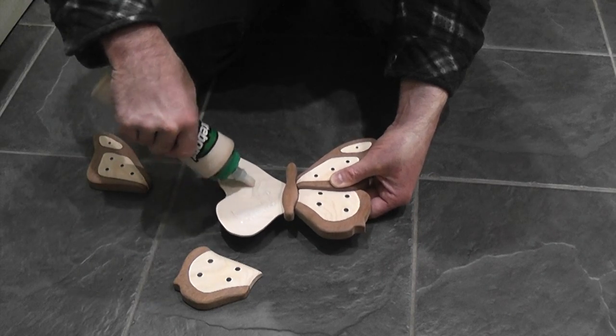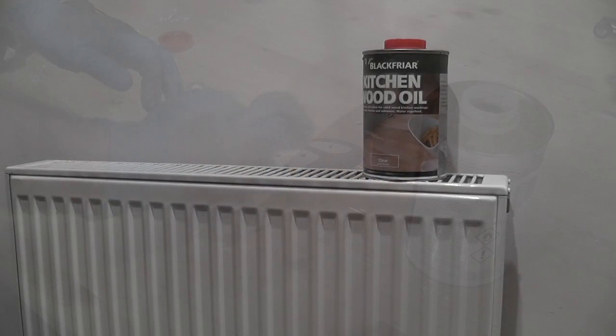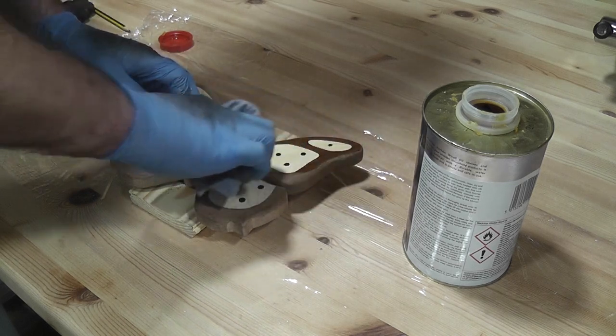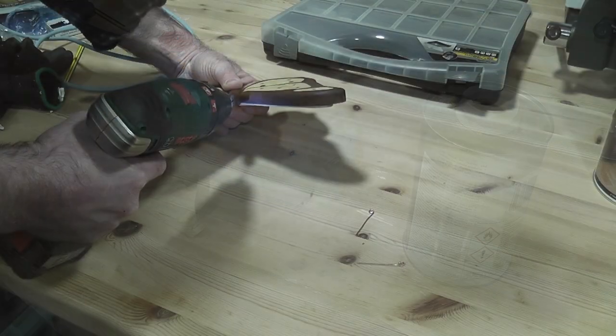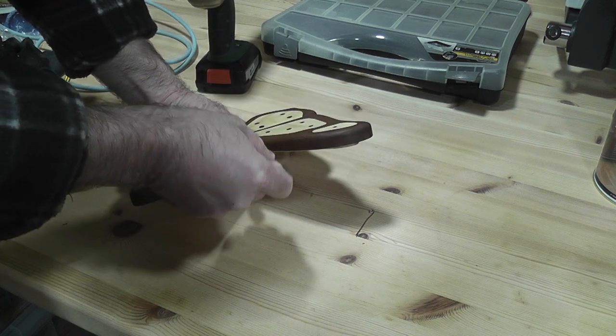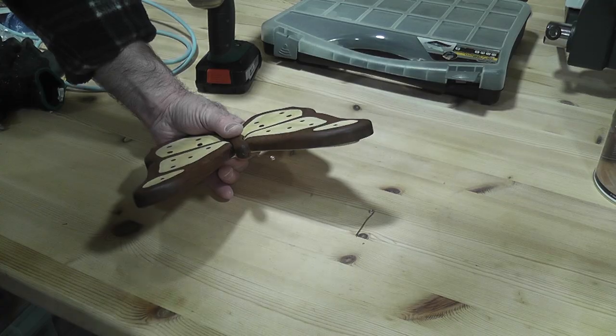For the finish on the butterfly, I used some old kitchen oil that I had left. I warmed it up for a few minutes inside first, before giving it a single coat of oil and then letting it dry for 24 hours. For the antennae, I used some electrical earth wire and glued them in with CA glue. And that was it! Project Butterfly was complete.